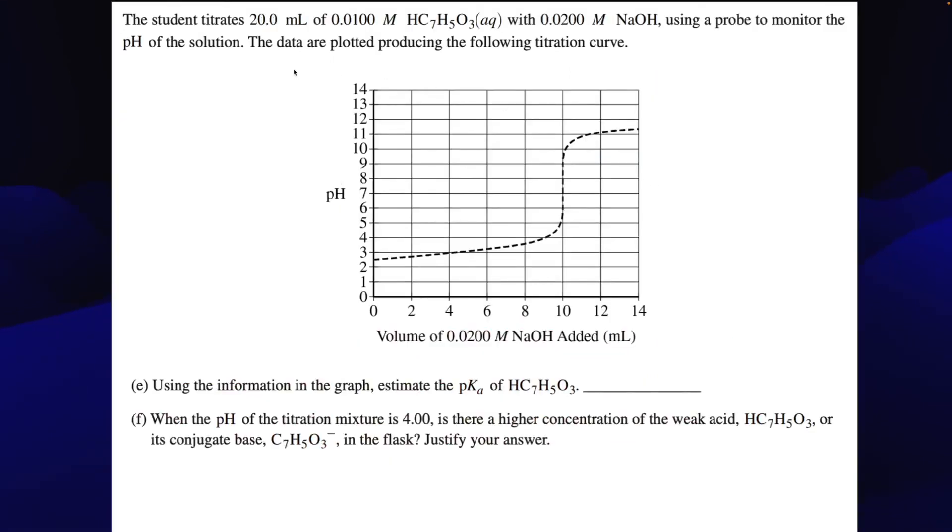All right, a student is doing a titration. So they're titrating 20 mL of a 0.01 molar HC7H5O3 with 0.0200 molar NaOH using a probe to monitor the pH of the solution, and the data is plotted using the titration curve below. So E says, using the information in the graph, estimate the pKa.